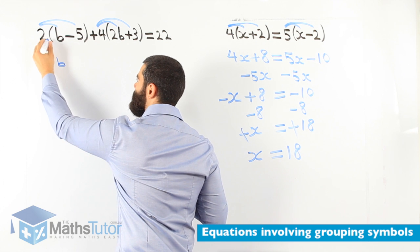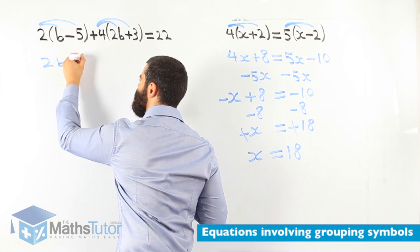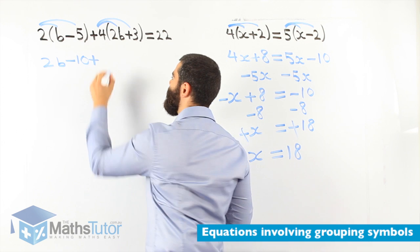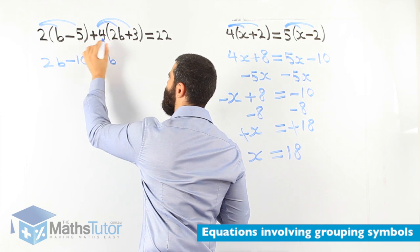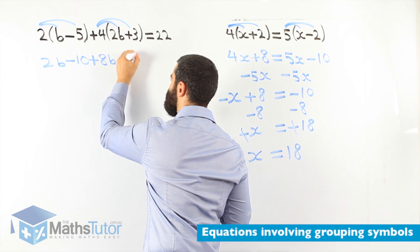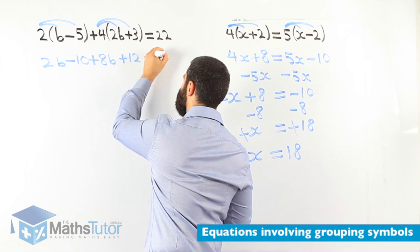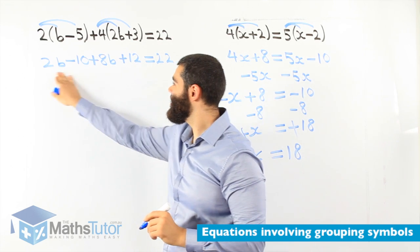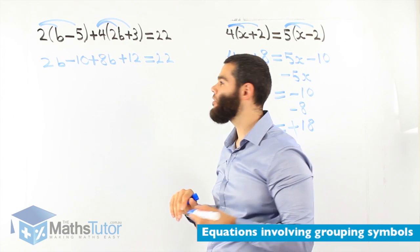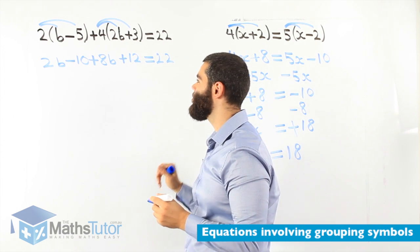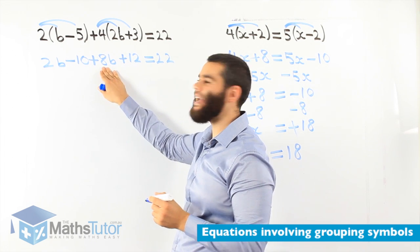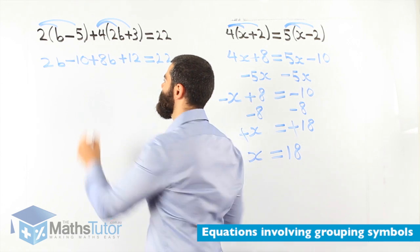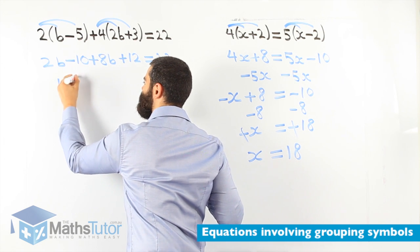2b, 2 times negative 5 is negative 10, plus 4 times 2b is positive 8b, and 4 times 3 is positive 12, equals to 22. What do we do next? Very important. We can identify here that we are going to collect like terms. We are going to add or subtract the like terms. 2b plus 8b. That negative belongs to the 10. So, 2b plus 8b is 10b.